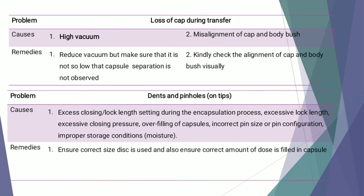The next defect is dent and pinhole on tip. The causes for dent and pinhole are excess closing or lock length setting during the encapsulation process, excessive lock length, excessive closing pressure, overfilling of capsule, incorrect pin size or pin configuration, and improper storage conditions such as moisture. The remedy is to ensure the correct size disc is used, ensure the correct amount of dose is filled in the capsule, and make sure capsules are stored in proper hygienic conditions.